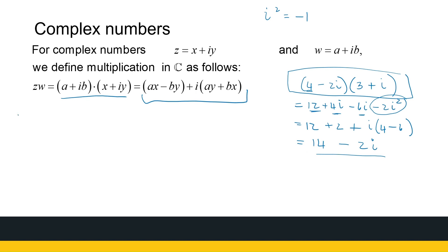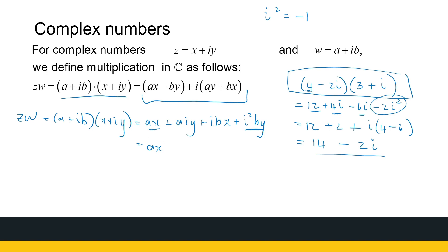Now let's look at the general case. If ZW equals A plus iB times X plus iY, multiplying out the brackets gives AX plus AiY plus iBX plus i squared BY. Since i squared equals minus 1, this becomes AX minus BY for the real part, plus i times AY plus BX for the imaginary part. That's where the formula comes from. You can either memorize it or just multiply out the brackets directly — the latter is the method I prefer.